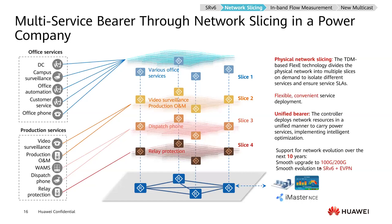The next application is network slicing, using technology such as FlexE. This technology is used to meet different service requirements by assigning them to different slices. Different slices have isolated bandwidth, ensuring each service can meet different users' experience requirements and SLA targets.